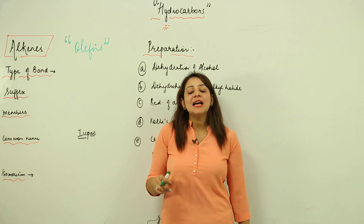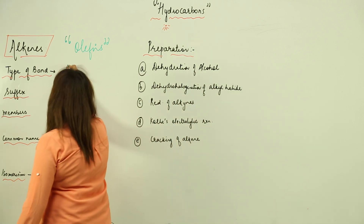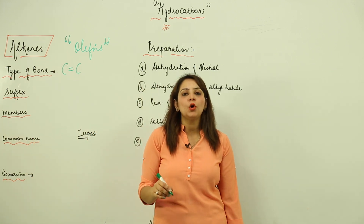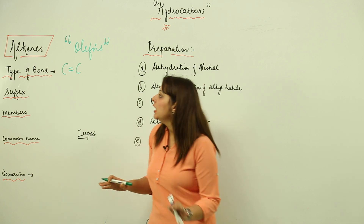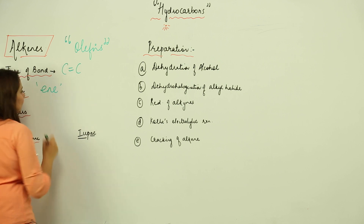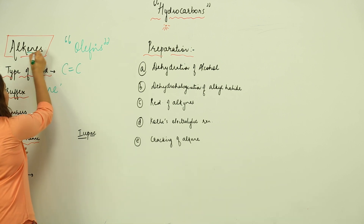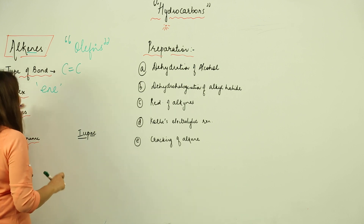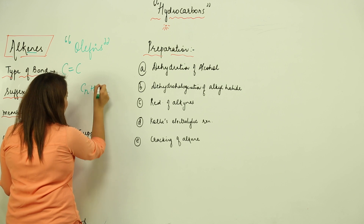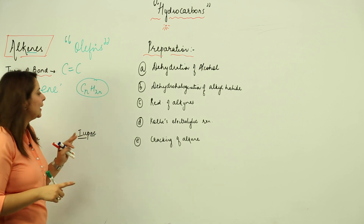Alkenes belong to an unsaturated system, where the carbon chain possesses at least one double bond. Minimum one double bond is present in a carbon chain. The suffix for alkenes is 'en'. The general formula is CnH2n, whereas alkane was CnH2n+2. Here we have CnH2n.